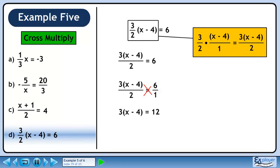Cross multiply to get 3 times x minus 4 equals 12. Multiply 3 through the brackets. We now have 3x equals 24. Divide both sides by 3 to isolate x. And our final answer is x equals 8.